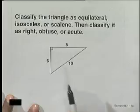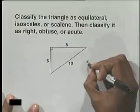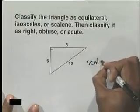Because the lengths are all different, we say then that this would be a scalene triangle.